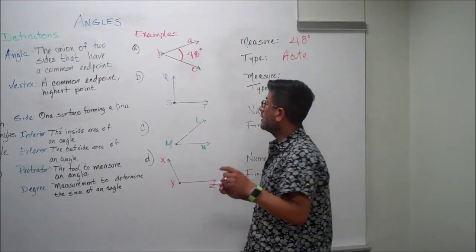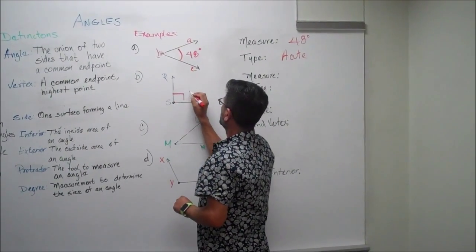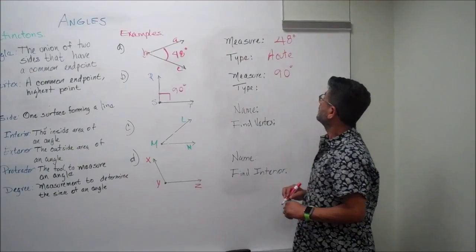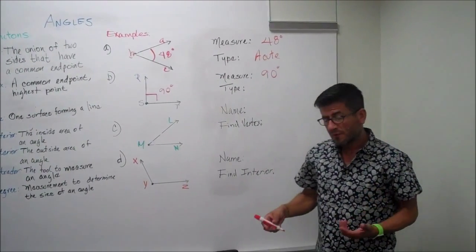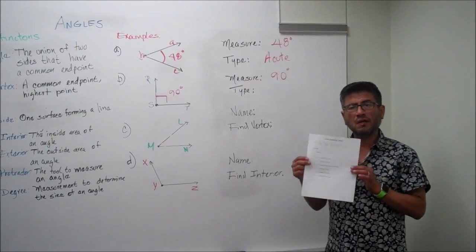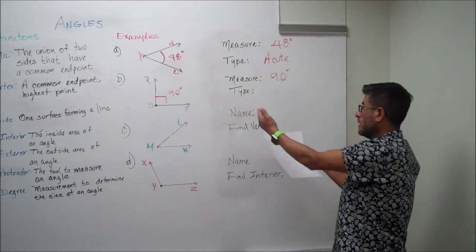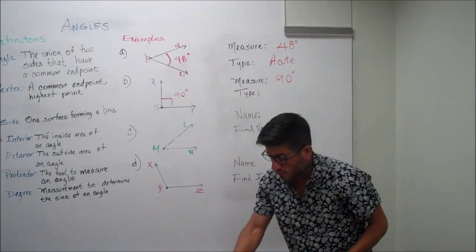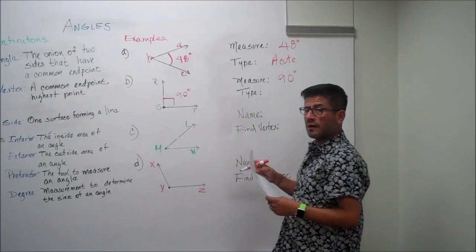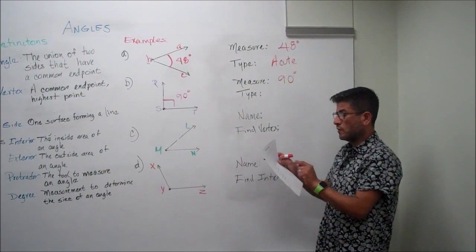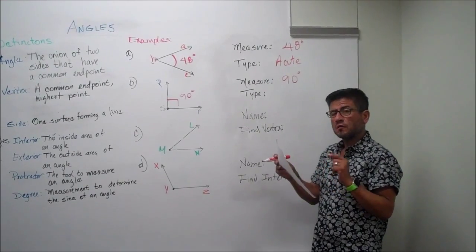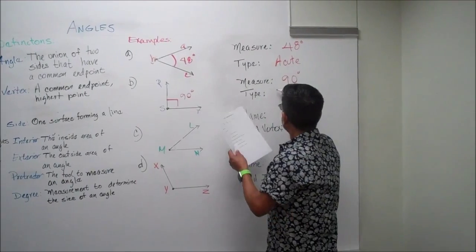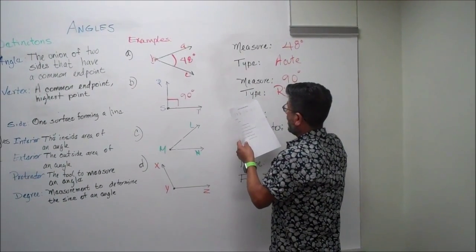This is how you do a 90-degree angle. You're going to write it down right here too. Now it's asking us for what type of angle is this. Look at your handout, compare what you have on the board. And it seems like we have a right angle. Look at the definition on the right angle — it says an angle that is 90 degrees exactly. And that's what we have, so it is a right angle.